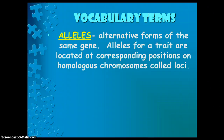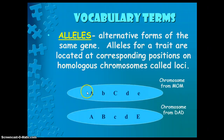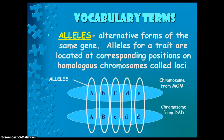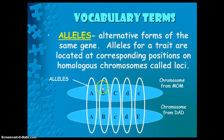Alleles are alternative forms of the same gene. Alleles for a trait are located at corresponding positions on homologous chromosomes called loci. Here we have a pair of homologous chromosomes — let's say chromosome number one — and on it we have different genes. They're going to have maybe the same alleles or maybe different alleles. For example, big B codes for brown eyes and little B might code for blue eyes — it's still the same gene for eye color, but big B versus little B are their alternative forms.